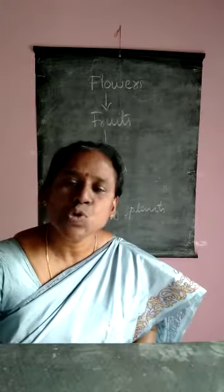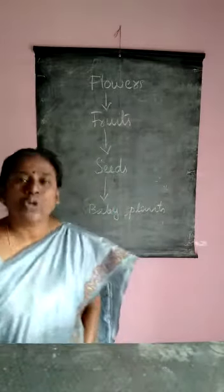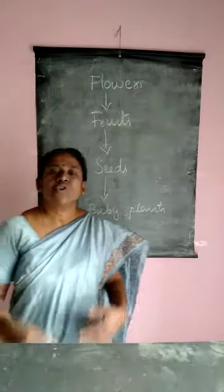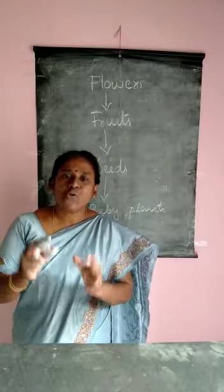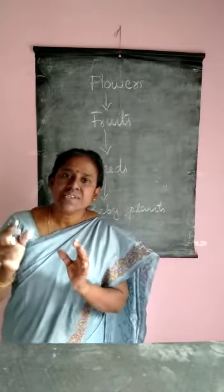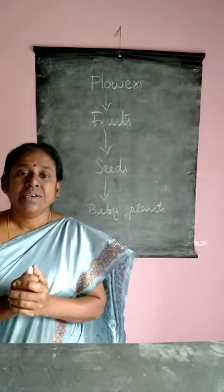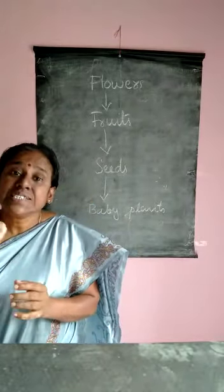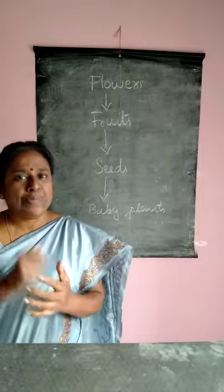Most flowers grow into fruits. Fruits have seeds. Inside the seed there is a baby plant.